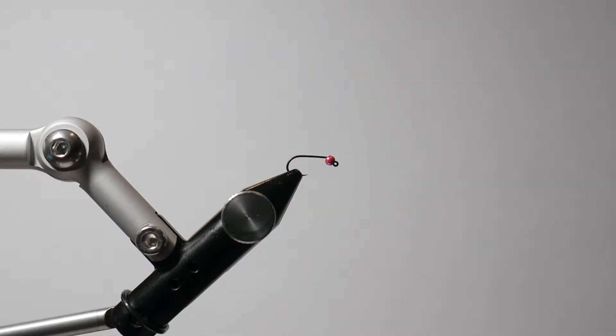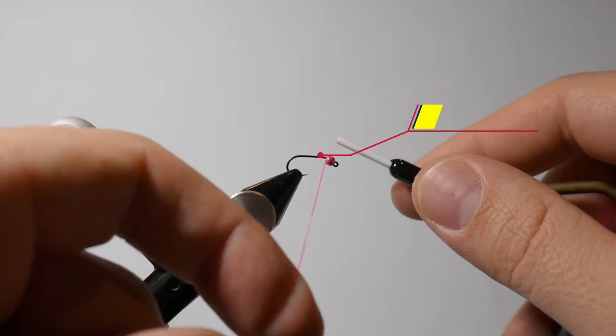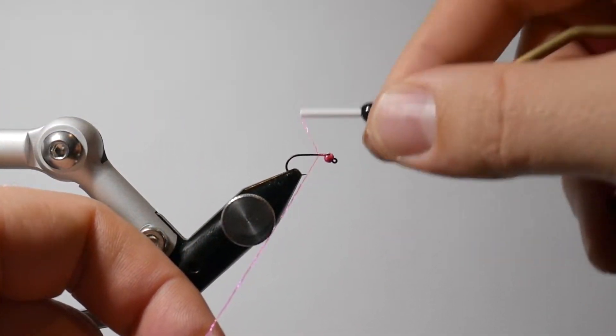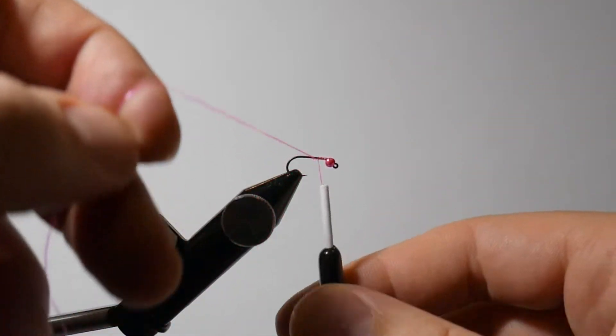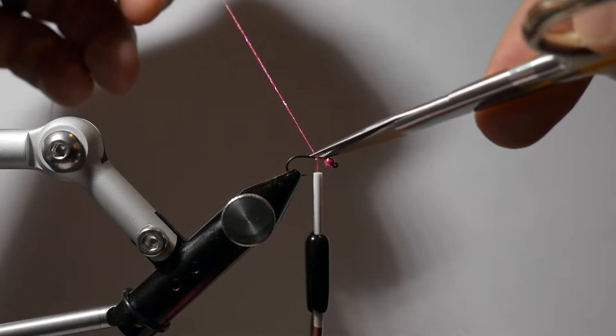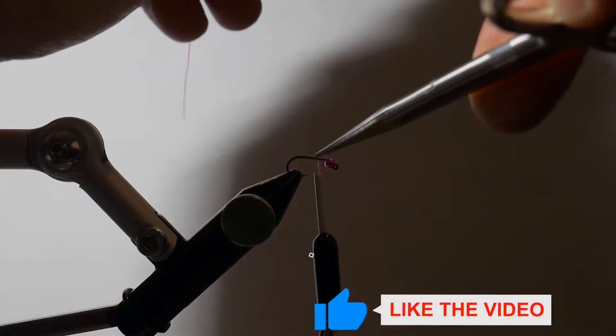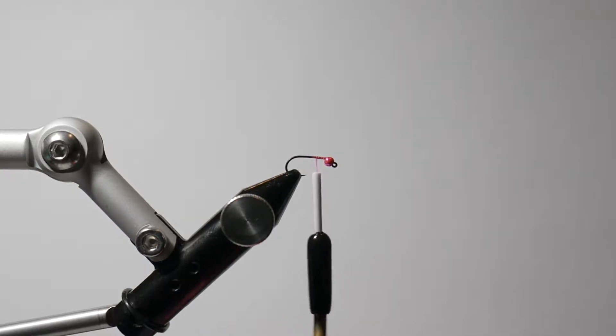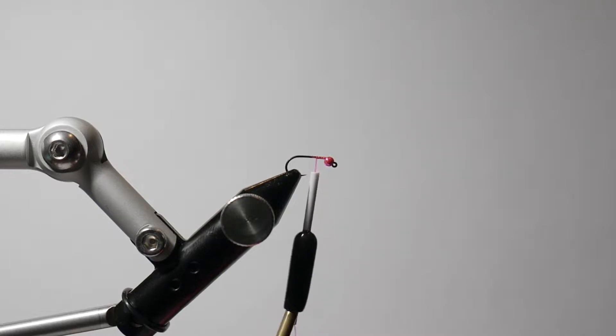I'm going to get a couple wraps right behind this bead here, fairly tight wraps, and then I'm going to take my scissors here and I'm just going to snip that tying quill free.